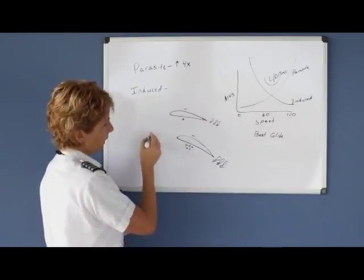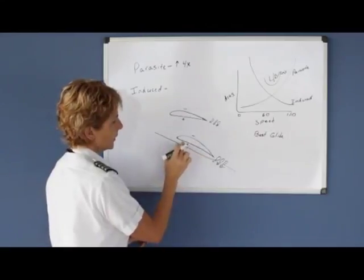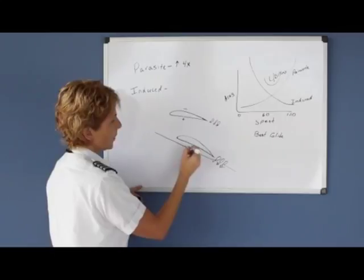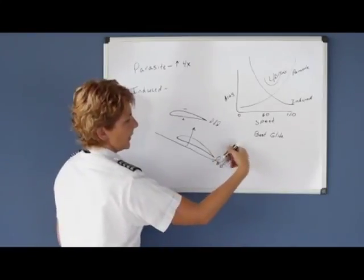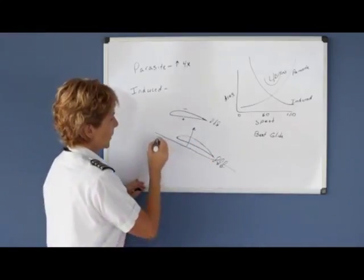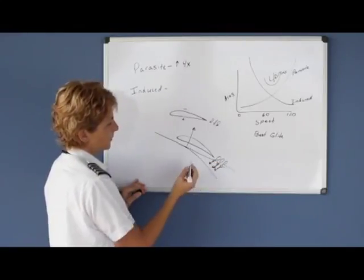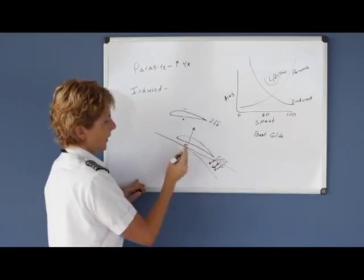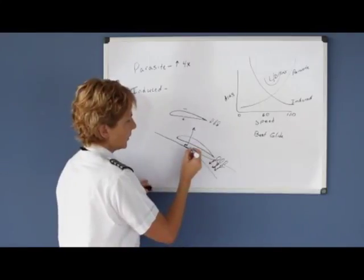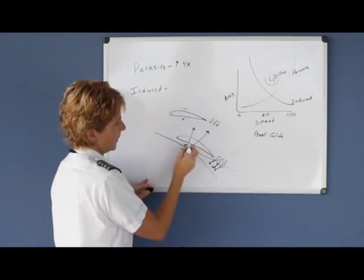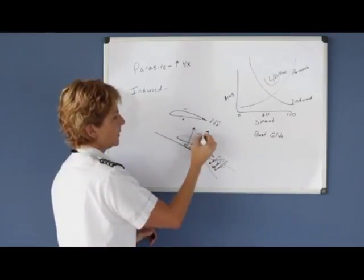If we look at the wind that passes underneath the wing, the lift vector always acts perpendicular to the relative wind. But when wing tip vortices push the air downward, they actually bend the airflow. Since the lift vector must remain perpendicular to that relative wind, bending the relative wind downward bends the lift vector backwards. That backward component is our induced drag.